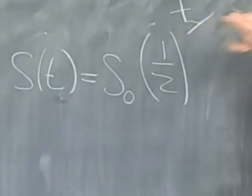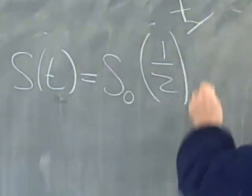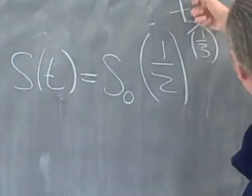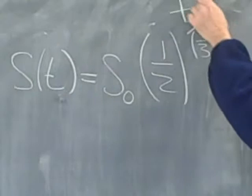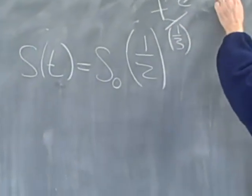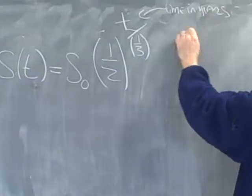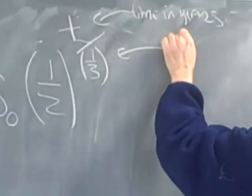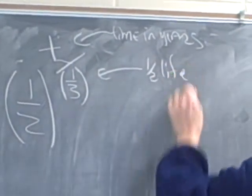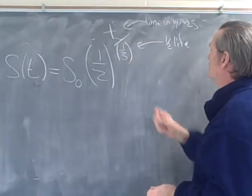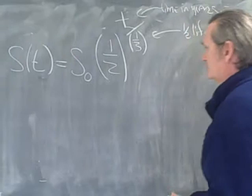Now the half-life of a sock is four months. I want to measure time in years, so four months is one third of a year. So this is time over half-life, time in years and half-life. I quoted the half-life as four months, but four months is a third of a year, so the half-life is one third of a year.